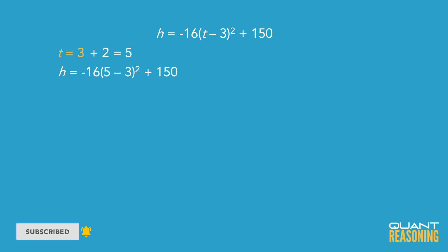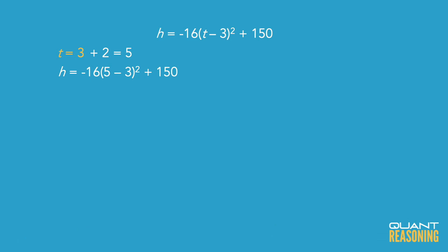If I put five into t, I get negative 16 times two squared, which is negative 64. Don't forget you have a plus 150. So what's negative 64 plus 150? That's 86. The correct answer is B.